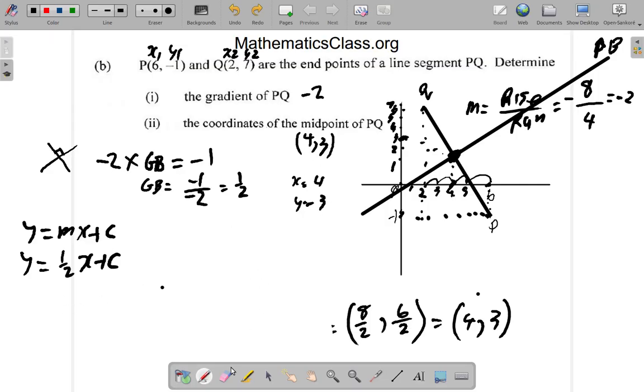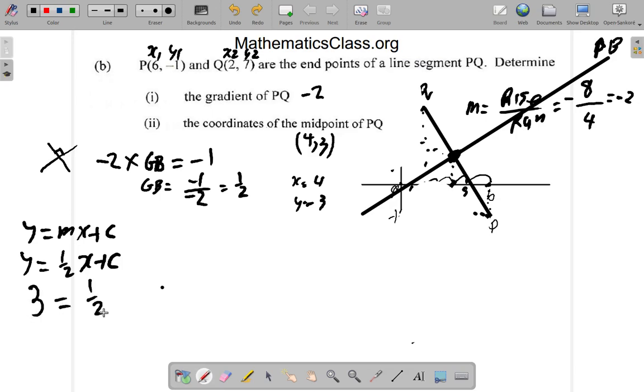So what you do, I don't really need all of these things anymore. Sometimes seeing all of this mess from the previous work can confuse you. So what you do here is to say the Y that we want to substitute here is 3. So it's 3 is equal to 1/2 times, and we want to substitute X is 4, plus C.